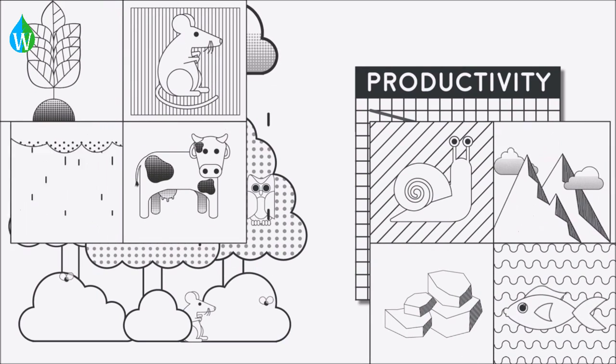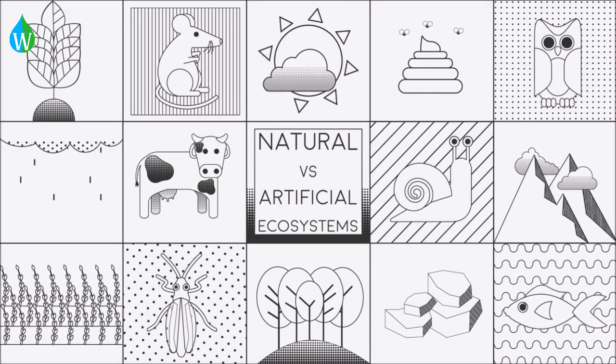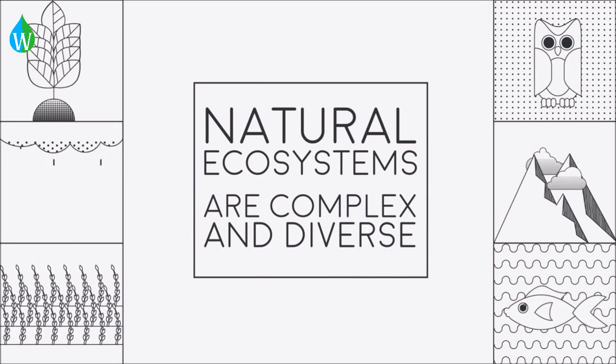From this video you should know some crucial differences between natural and artificial ecosystems. Most importantly, natural ecosystems are much more complex and diverse, whereas artificial ecosystems are much simpler and can be easily controlled for high productivity.